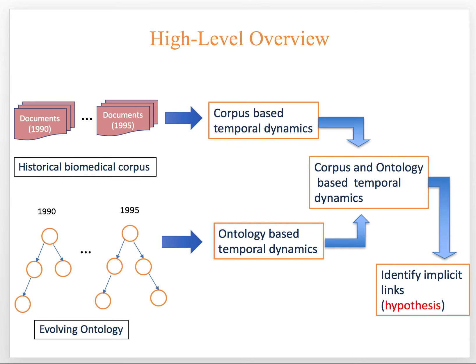This is the high-level overview of our model. We have two components. The first is corpus-based temporal dynamics. To generate corpus-based temporal dynamics, we exploit a historical biomedical corpus. At the same time, the biomedical domain also has several ontologies, and these ontologies evolve over the period of time too. So we generate ontology-based temporal dynamics as well. Since these two types of information are complementary, we propose to collaboratively exploit them and generate embeddings that are sensitive to both corpus and ontology. Finally, we use these final embeddings to identify implicit links.